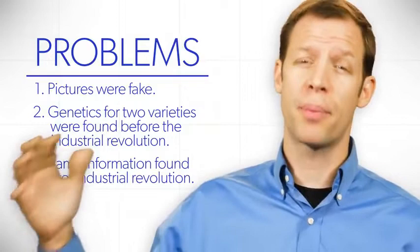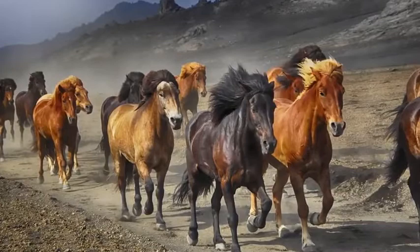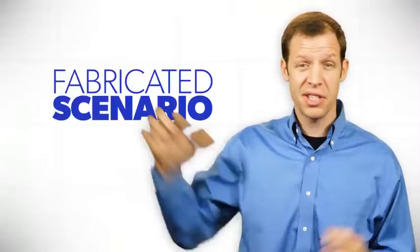And number six, horse evolution. If you were to look in your biology textbooks, you would see that horse evolution is often used as evidence that evolution really occurred. You would see a picture of a very small animal, almost looks like a fox or something like that, evolving into modern horse. But this scenario is fabricated.